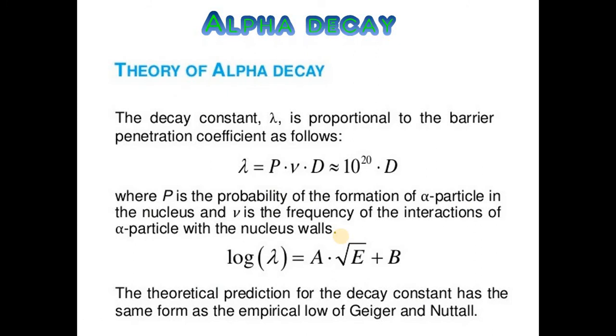The decay constant lambda is proportional to the barrier penetration coefficient as follows, where P is the probability of the formation of alpha particle in the nucleus and nu is the frequency of the interactions of alpha particles with the nucleus walls. The theoretical prediction of the decay constant has the same form as the empirical law of Geiger and Nuttall.